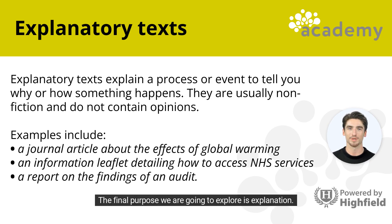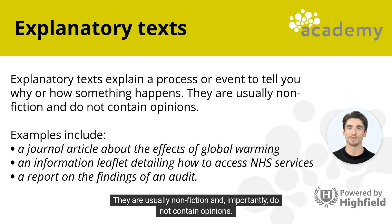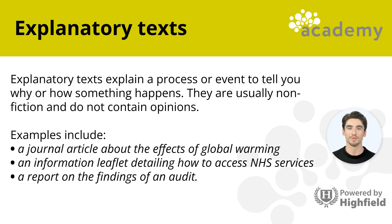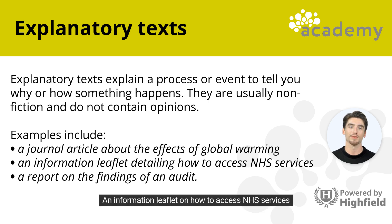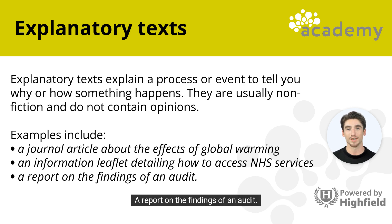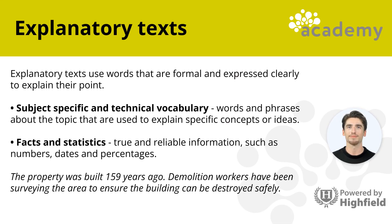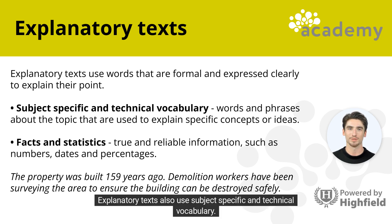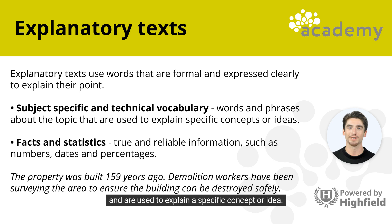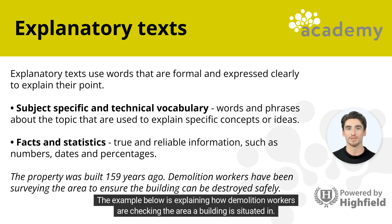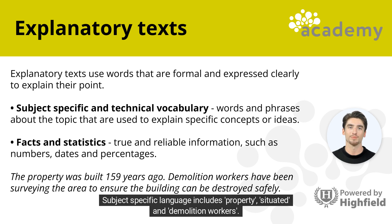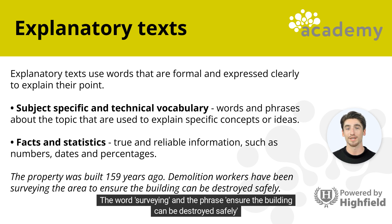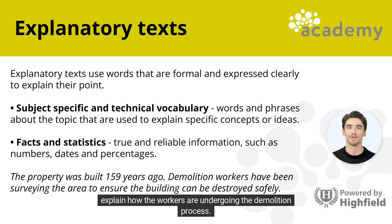The final purpose we are going to explore is explanation. Explanatory texts tell you why or how something happens. They are usually non-fiction and, importantly, do not contain opinions. Examples include a journal article about the effects of global warming, an information leaflet on how to access NHS services, and a report on the findings of an audit. Explanatory texts are typically formal and use subject-specific and technical vocabulary — words and phrases associated with the topic being discussed. The example shown explains how demolition workers are checking the area a building is situated in, using terms such as 'property,' 'situated,' and 'demolition workers.'